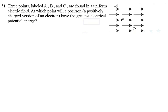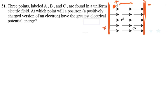In the next question, three points A, B, and C are in a uniform electric field. A positron — a positively charged particle with the mass of an electron — is placed at each point. At which point does the positron have the greatest electric potential energy? The electric field lines go from the positive plate to the negative plate. Because the positron is positively charged, point A has the most potential energy: it has the greatest distance to accelerate, which will convert to the most kinetic energy by the time it reaches the negative plate.